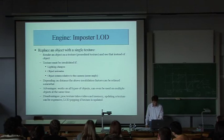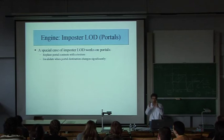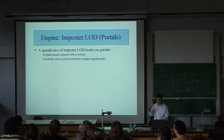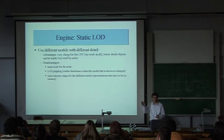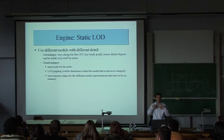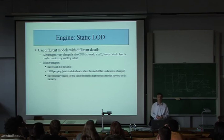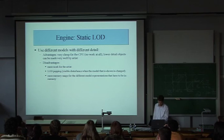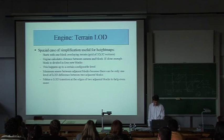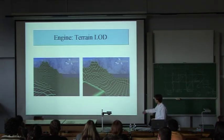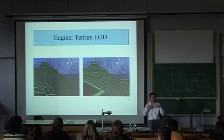Imposter and portal LOD are not completely functional yet. The landscape engine, because it's height-map based, has very specific algorithms for level of detail. You can see an example where on the left there's a higher detail version with more polygons, and there's a lower detail version as well. The landscape engine also supports lower detail for mountains in the distance and more detail for mountains that are close.